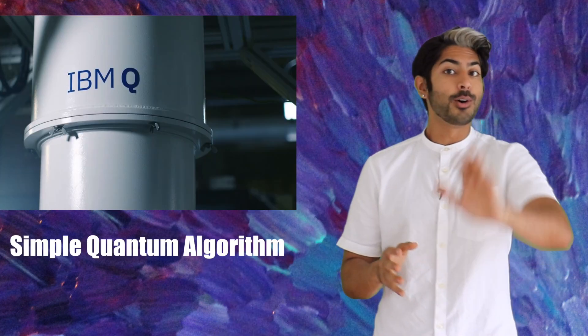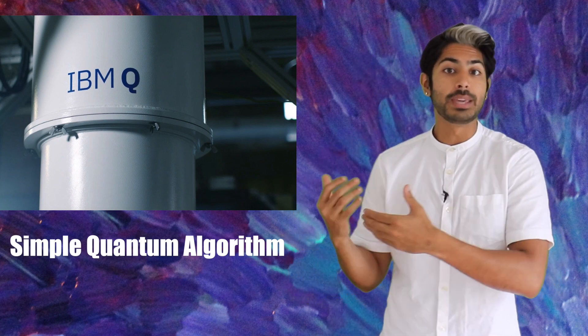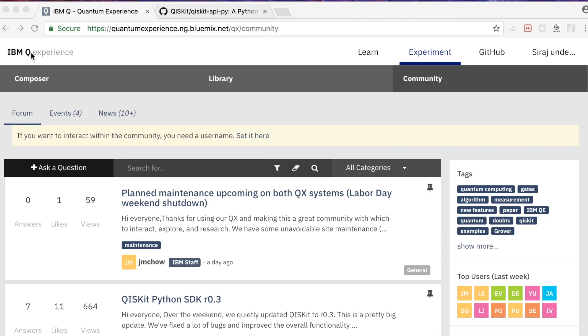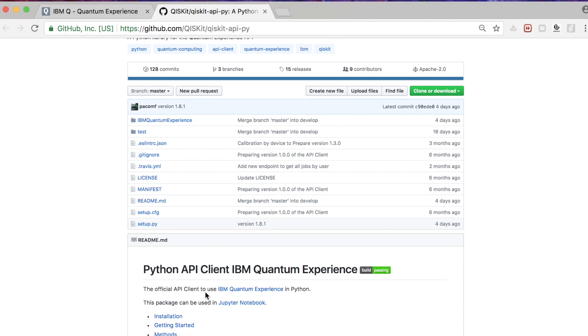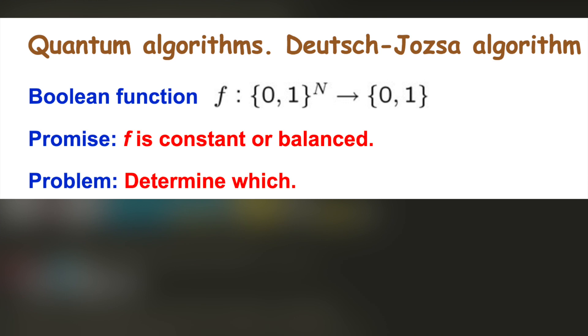So let's build a simple quantum algorithm in Python using IBM's quantum API. To learn more, you can sign up for access to their API easily on their website, then download the SDK to use it in Python. After we import it, we're going to build the Deutsch-Jozsa algorithm, one of the first quantum algos to be proposed.